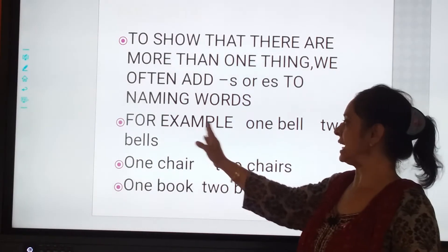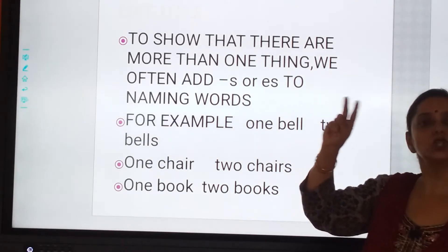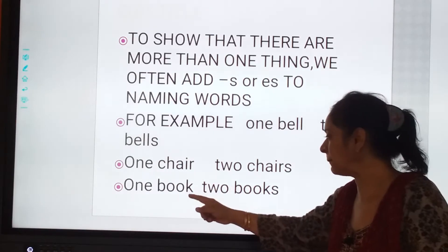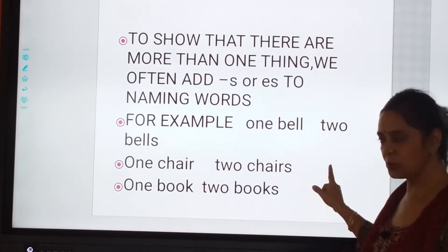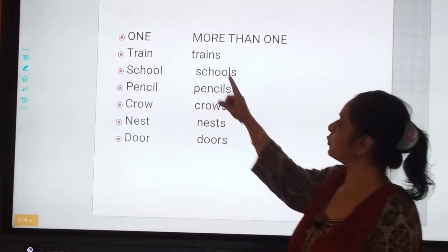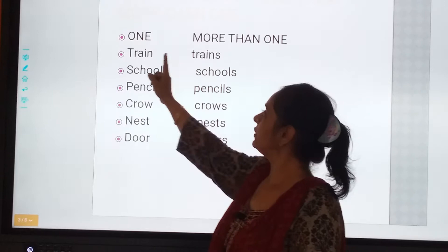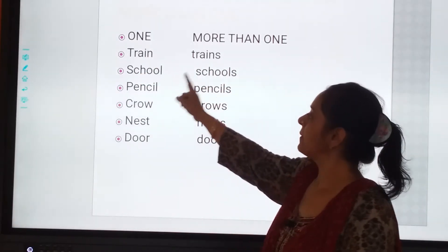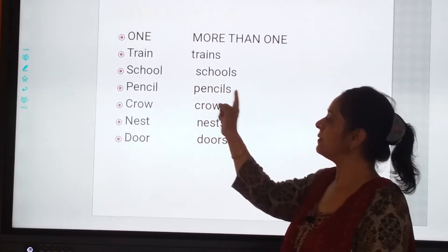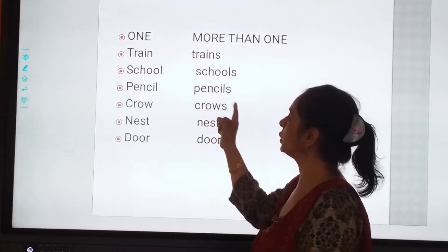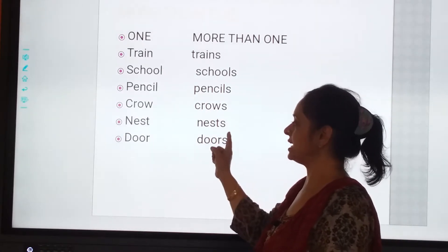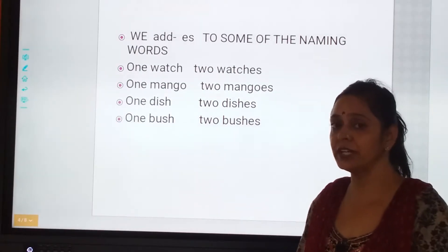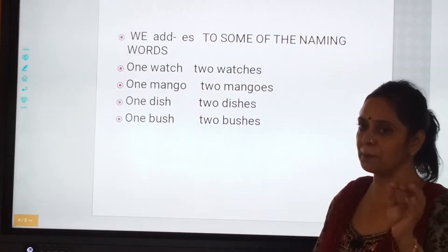For example: one bell, two bells; one chair, two chairs; one book, two books. Yes, one and more than one. Train, trains. School, schools. Pencil, pencils. Crow, crows. Nest, nests. Door, doors. So what have we put here? We have put S.